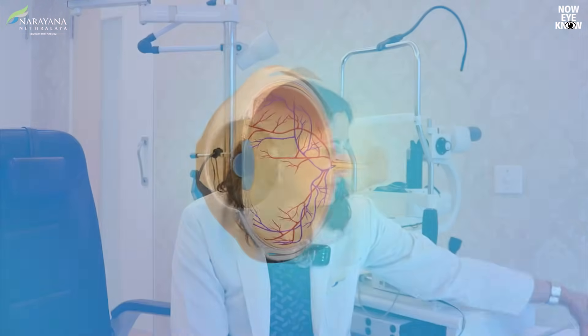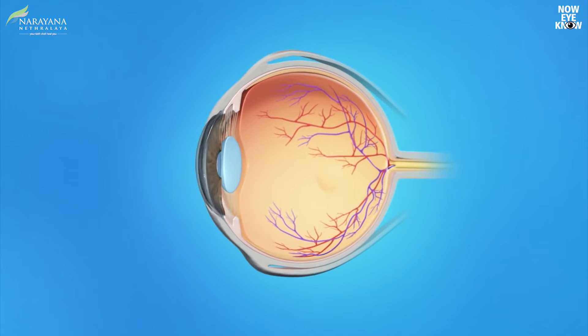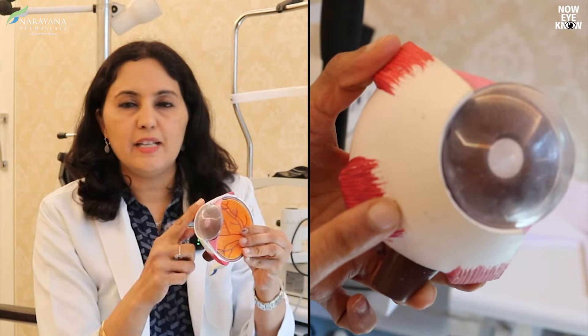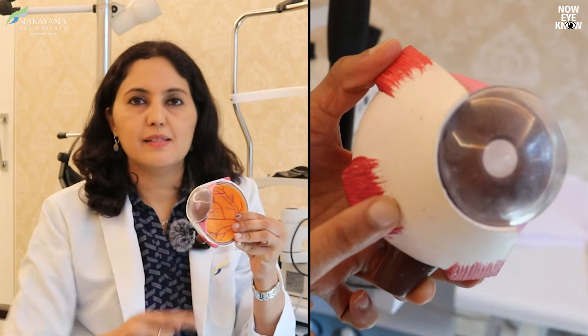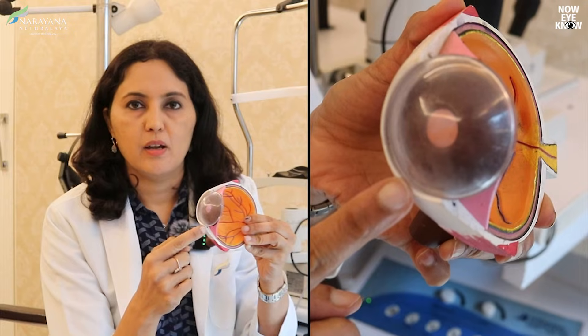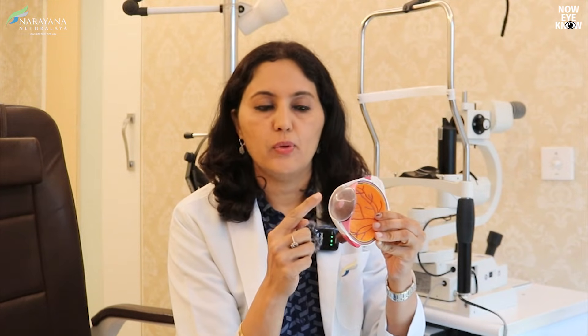Let us look at the anatomy of the eye to understand vitrectomy a little better. This is the front of the eye. The white part of the eye is the sclera, and the front part is a transparent structure called the cornea. Most cataract surgeries are done through the cornea or the junction between the cornea and the sclera, which we call the limbus. Vitrectomy, however, is done through the sclera — the white of the eye.